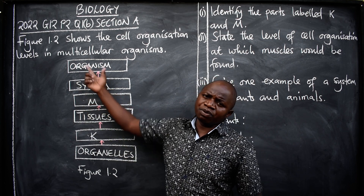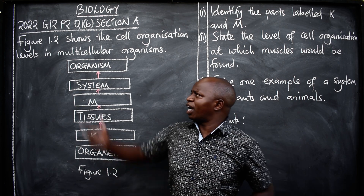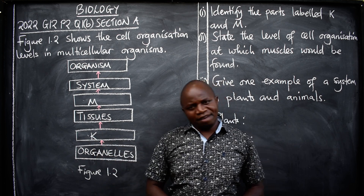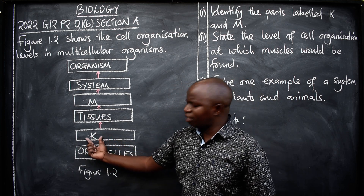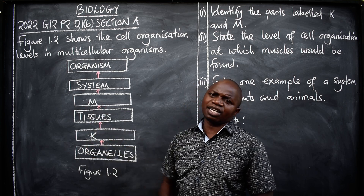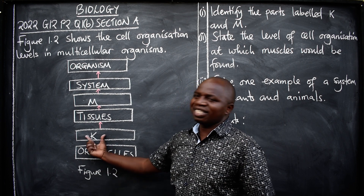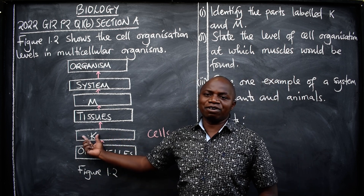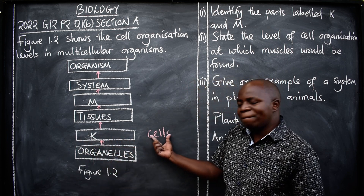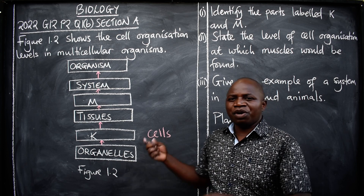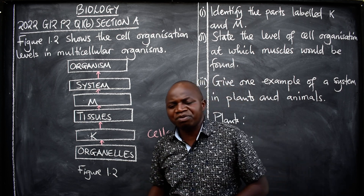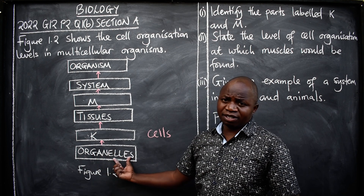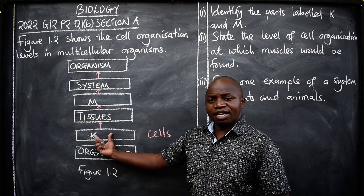We say the organism is made up of all these levels. Now let's identify what is missing. What is this level between organelles and tissues? From organelles, the next level is called cells. So organelles are all the parts of the cell — when we talk about the mitochondria, the cell membrane, the cytoplasm — all those are organelles. Then comes cells.